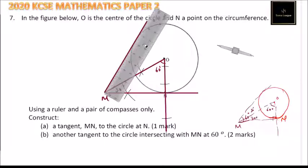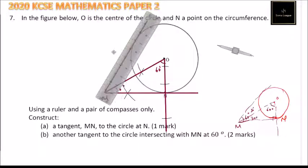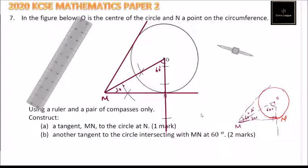That is the tangent that we are required to draw. So it means that this angle is 30 degrees. The combination of these two angles is 60. Another tangent to the circle intersecting with MN at 60.